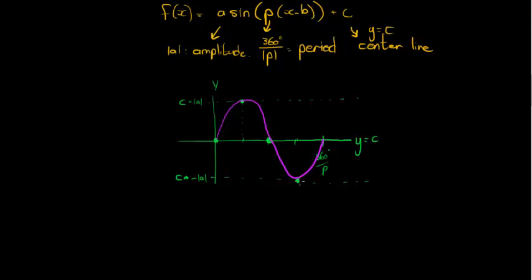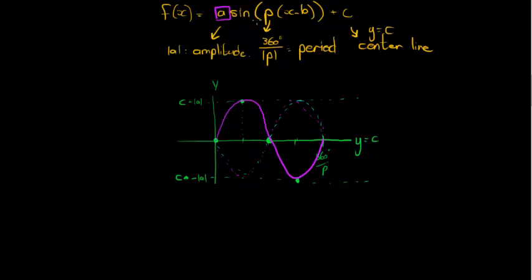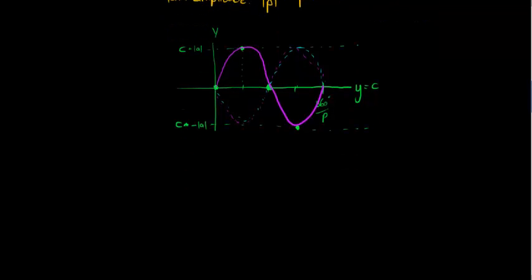All you need to do now is substitute the values needed. If a is negative, then we reflect in the x-axis. If p is negative, I'll also reflect in the x-axis. If I've already reflected once and reflect again, I'll just get the same graph. So if a or p is negative I reflect in the x-axis; if both a and p are negative, I get the normal sketch again because reflecting twice gives the original.